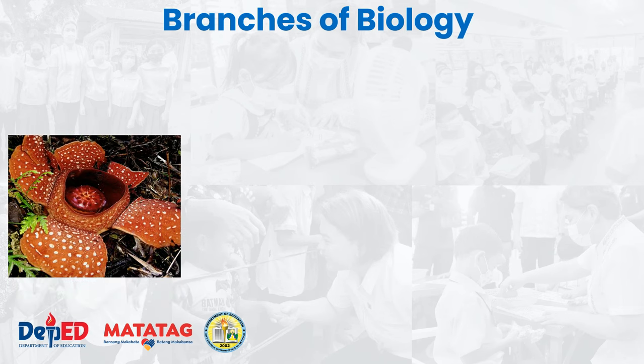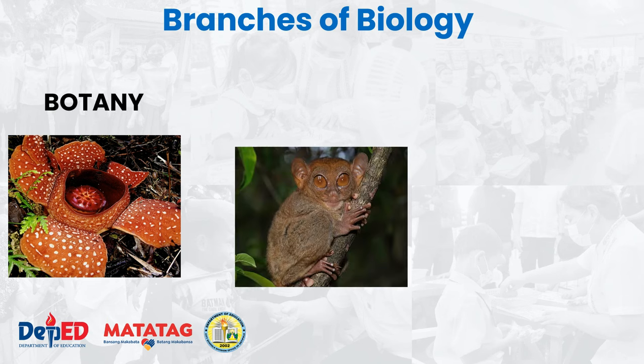So what can you observe on the first picture? If you think this is the biggest flower on earth, actually that's correct. That is what we call Rafflesia. Rafflesia speciosa is one of the 13 species found in the Philippines, also found all around the globe. So it talks about botany.